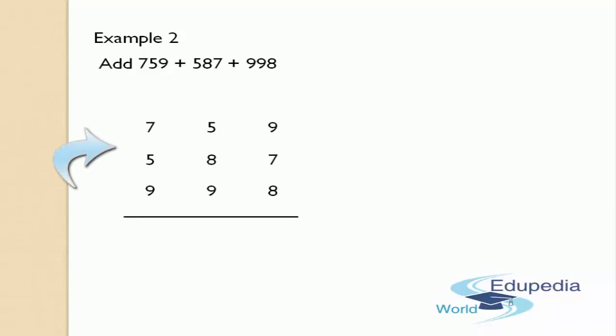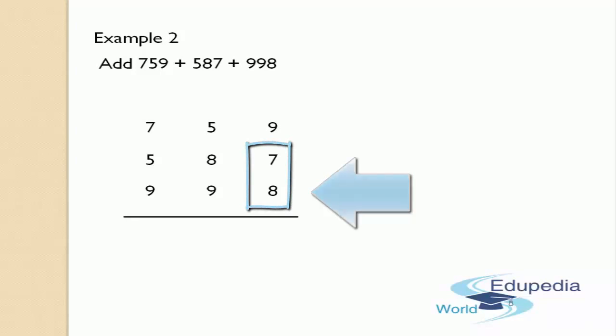As per our traditional way, we first have to set these numbers in specific rows and columns as per their place values, like this. After setting them according to the place values, we have to start adding from the rightmost column, that is from the ones place. Now let us start adding — 8 plus 7. When you add 8 plus 7, the number you are going to get is 15.